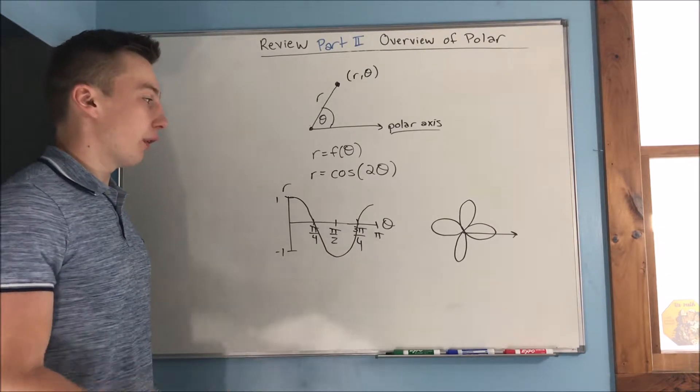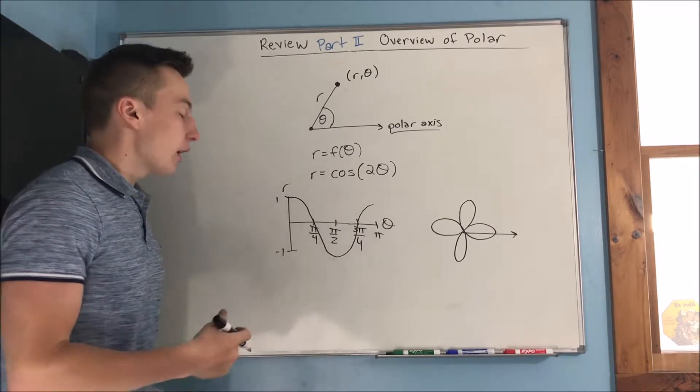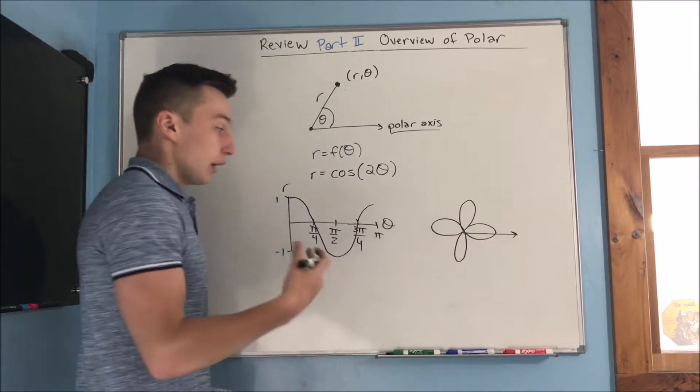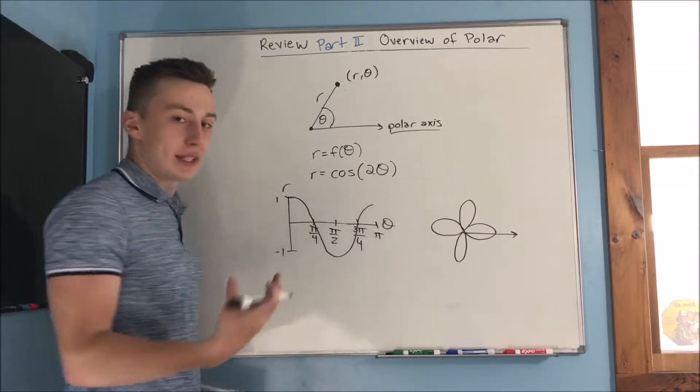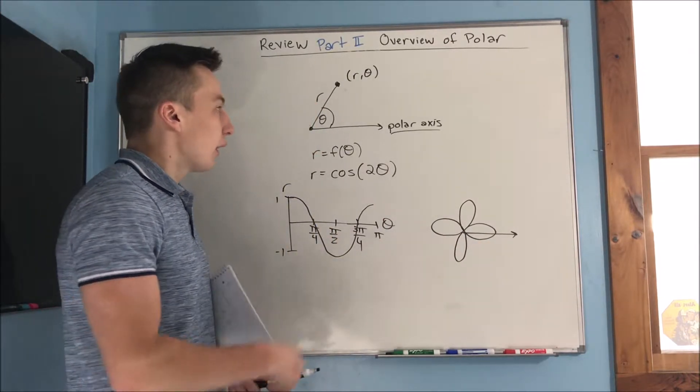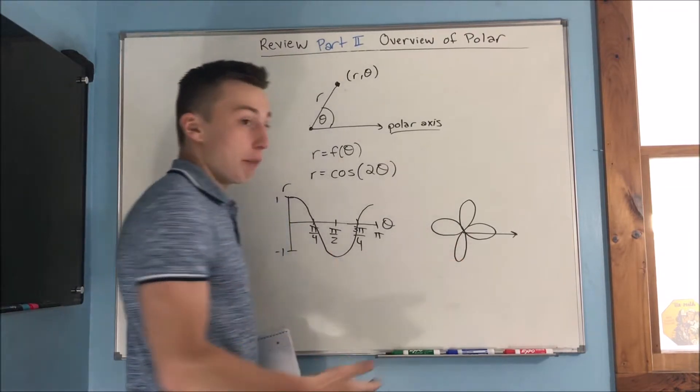That is the graph of R equals cosine of two theta. Now, you can extend this out to two pi if you want. You kind of understand the theme of what's happening, so you're fine. But yeah, basically, that's how we were able to graph polar.